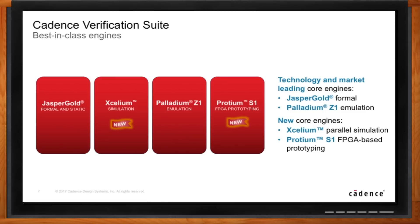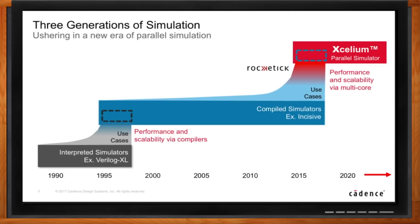Cadence has been big in simulation for a long time. Looking back at simulation in the 90s, when we were moving from schematics to VHDL and Verilog, the test bench side was much simpler. We used interpreted code simulators and were getting great gains in performance on processors — 200 to 400 to 800 megahertz, eventually plateauing around 4 gigahertz, with typical usable frequencies around 2 to 3 gigahertz. We also moved from 32-bit to 64-bit during that time.